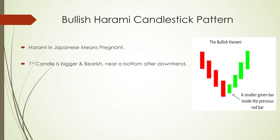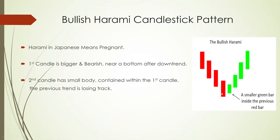The first candle is bigger and bearish — that is the downtrend. The second candle has a small body contained within the first candle, meaning the previous trend is losing strength. That's why we identify this as a Bullish Harami.